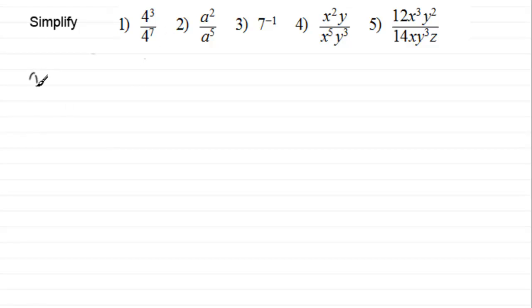with number 1, we've got 4 to the power 3, or 4 cubed, divided by 4 to the power 7. To simplify this, all we need to do is subtract our powers if they're to the same base. They are to the same base, base 4, and if we subtract the powers, we've got 3 take away 7,